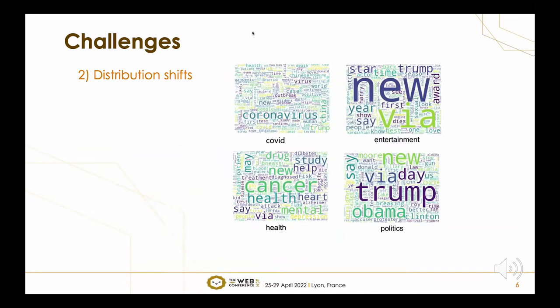The second challenge is the issue of distribution shifts. There are various topics of news in social media, and as illustrated in the word cloud figures, different topics have different word distributions and social context distributions. For example, if the model is trained on entertainment or politics news, but a black swan incident such as COVID-19 happens, the model may fail to detect fake news in these novel topics.